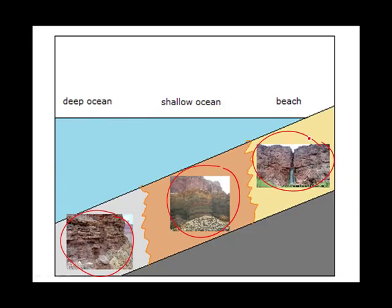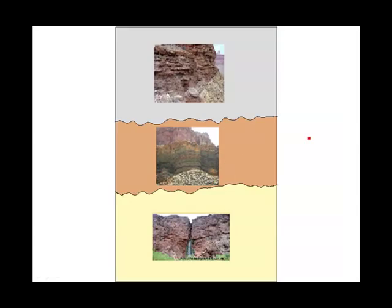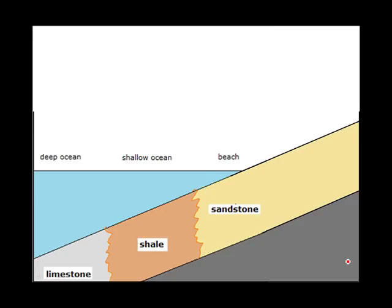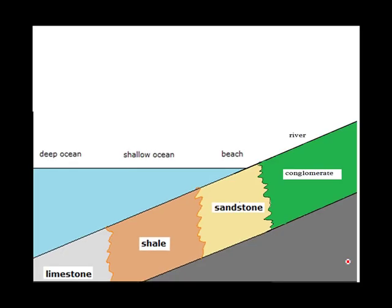Does that mean we're done? Of course not. There's a problem here. We find that the deep sea sediments — the limestone — was formed on top of shale, on top of sandstone. How did that form? Let's go back to our limestone, shale, and sandstone forming at the deep ocean, shallow ocean, and the beach. I'm going to add one more layer: a conglomerate that could have formed from rivers on the continent.